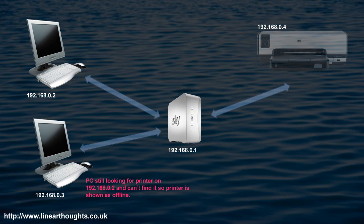The problem is that PC bottom left, although it has a new IP address itself, is still looking for the printer on the original IP address. As a result of the IP address being changed when this new network powered on, it can't see the printer — and this is the reason we get a printer offline message. If you look on forums for solutions, one of the most common ones advised by Microsoft itself is to reinstall the printer driver on the PC in question.